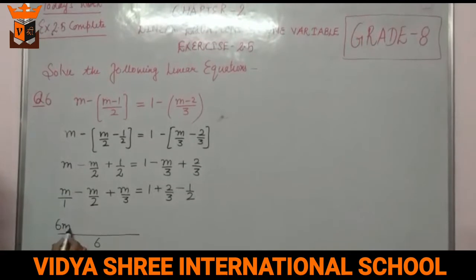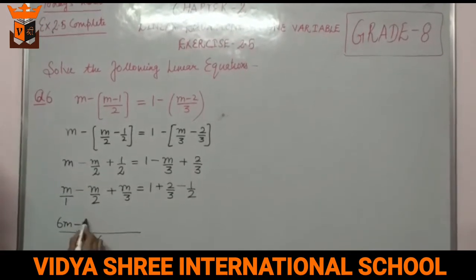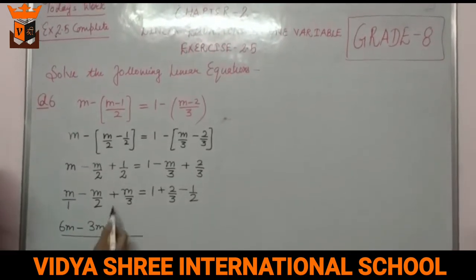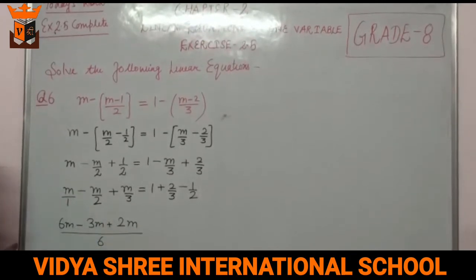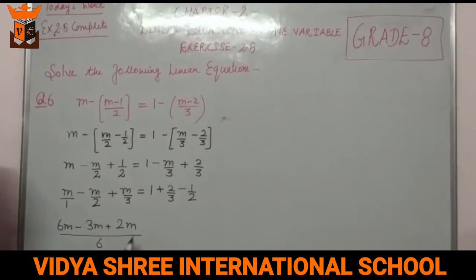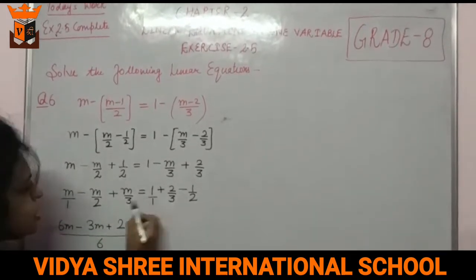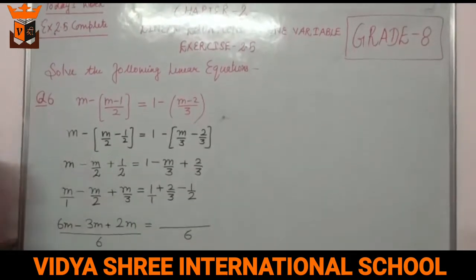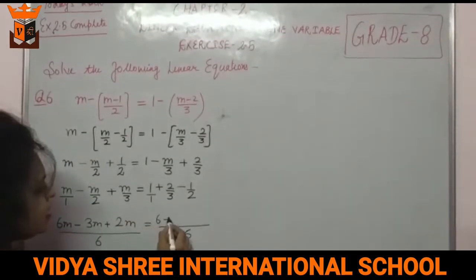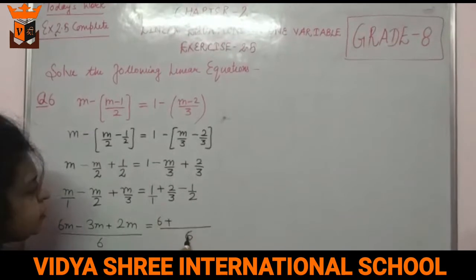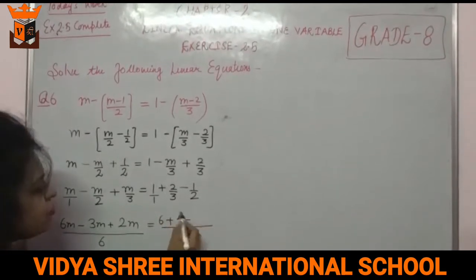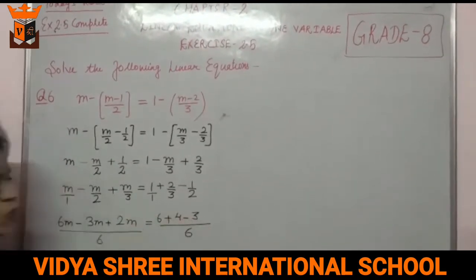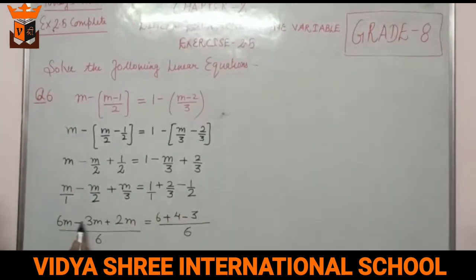With LCM 6: 6M minus 3M plus 2M on the left, divided by 6. On the right: 6 ones are 6, 3 twos are 6 so 4, 2 threes are 6 so 3. This gives 5M/6 on the left and (6 plus 4 minus 3)/6, which is 7/6, on the right.